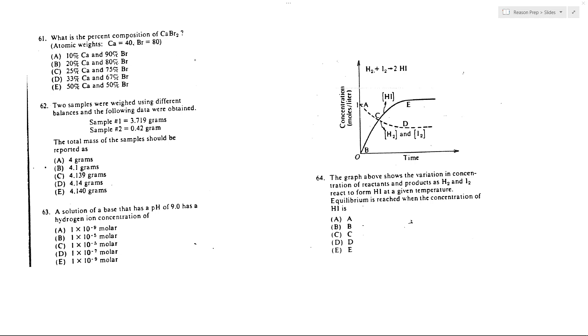What is the percent composition of CaBr2? So we know the mass of Ca is 40. The mass of each Br is about 80. So the total mass of this would be 80 times 2 plus 40. So that's 200. That's our total mass.